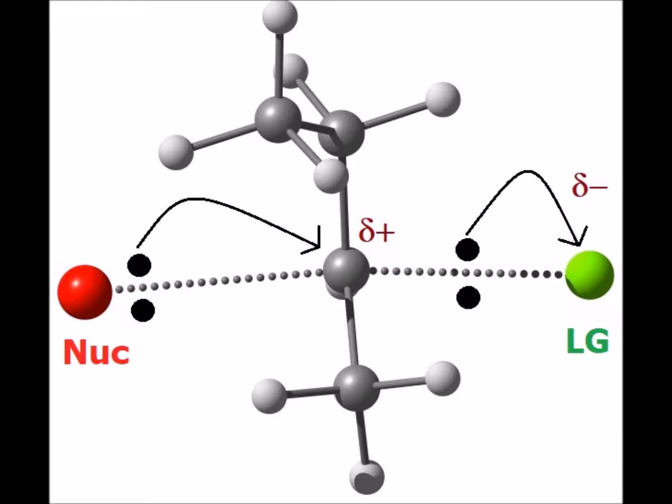The electron pushing arrow to the left goes from the lone pair on the nucleophile to the atom it is going to bond to, which is carbon. Thereby, in the process of this arrow, we have a nucleophile-carbon bond formed. On the right, we see the arrow going from the lone pair onto just the chlorine atom, thereby showing that the chlorine leaves with the lone pair as chloride.